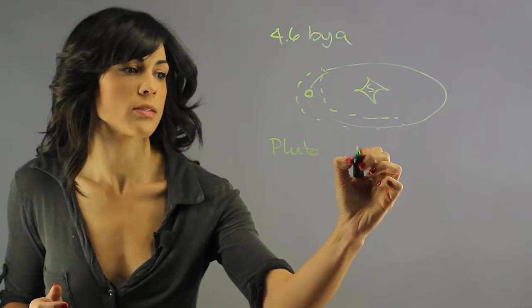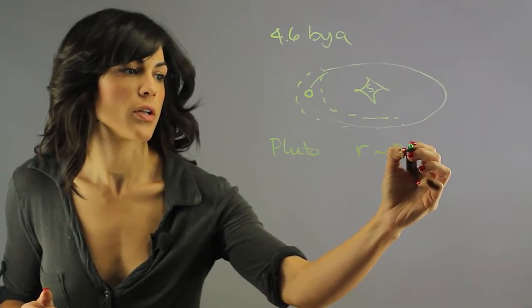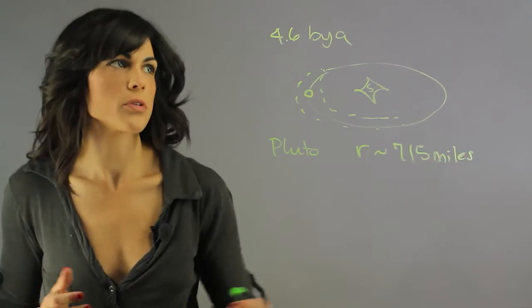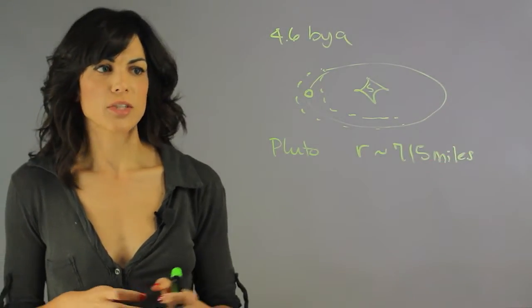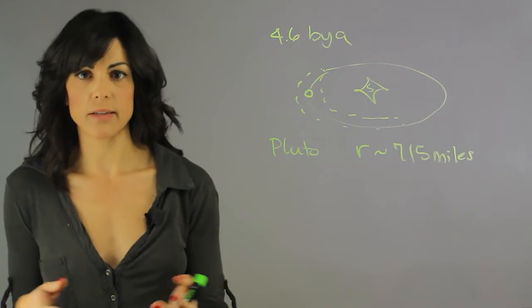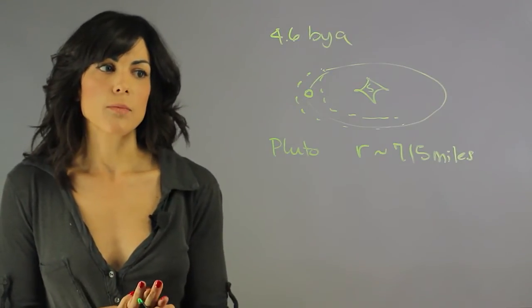The radius of Pluto is 715 miles, so about a thousand kilometers, so not very much. And it just failed to accumulate enough mass to become one of the gas giants.